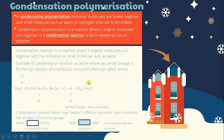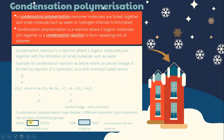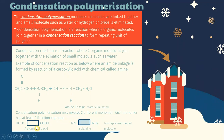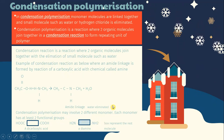An example of a condensation reaction is where an amide linkage is formed by the reaction of a carboxylic acid with an amine. Condensation polymerization may involve two different monomers, each monomer having at least two functional groups. You can see HOOC (carboxylic acid) and H2N (amine) — both represent the functional groups of each molecule. This is how condensation polymerization takes place.